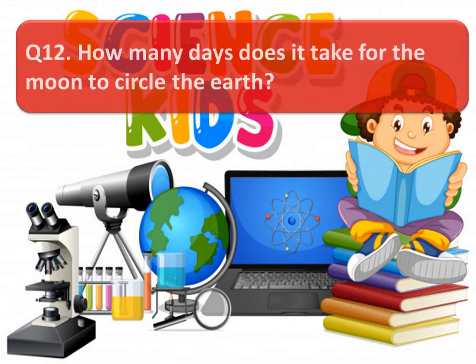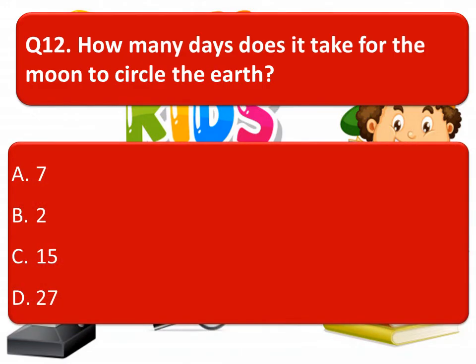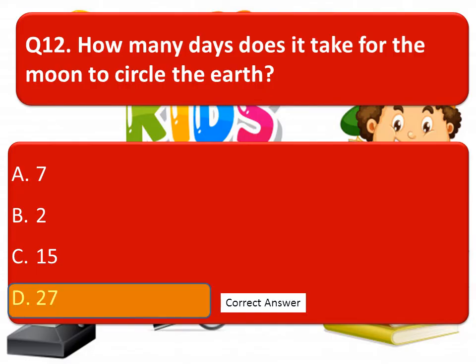The next question is: how many days does it take for the moon to circle the earth? The options are 7, 2, 15, or 27. The correct answer is 27.